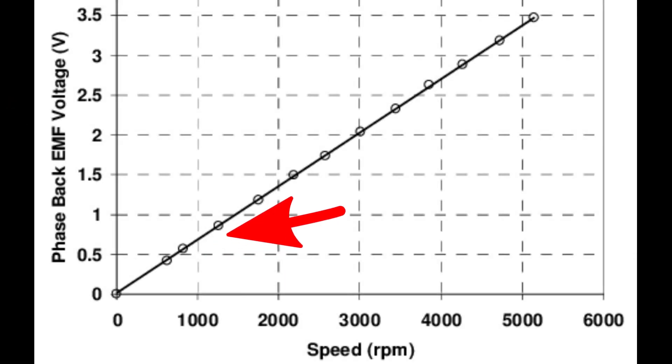As we spin our motor faster, its back EMF increases, meaning it's opposing us more, which might become a problem.